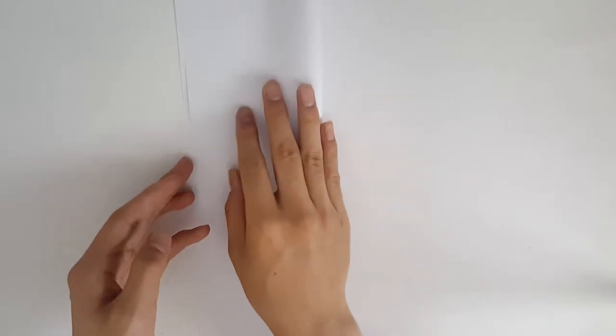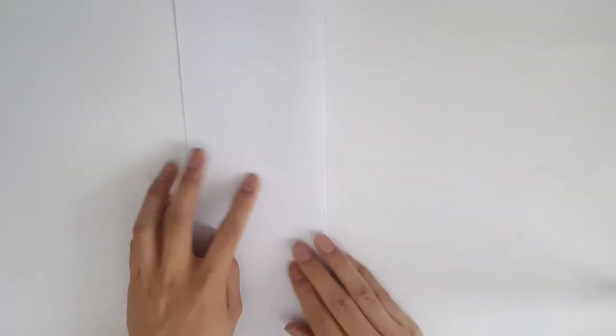First we're going to start off with a rectangle piece of paper, so A4 size, and we're just going to fold it in half vertically, and unfold.